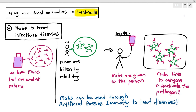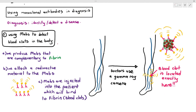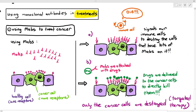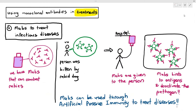In summary, for the exam: monoclonal antibodies can be used in diagnosis to detect blood clots and find their location; to diagnose cancer cells and detect the location and size of the tumor; in treatment to attach only to cancer cells and destroy them specifically through targeted therapy, leaving healthy cells undamaged; and to treat infectious diseases such as rabies or COVID through artificial passive immunity.